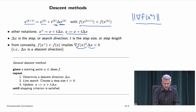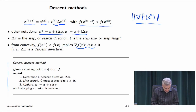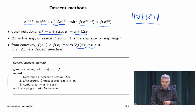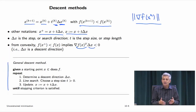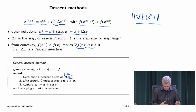Here's a generic descent scheme. Given a starting point in the domain, at each step you determine a descent direction, do a line search to choose t such that f decreases, then update x. You repeat until a stopping criterion is satisfied — in real control flow you'd compute the descent direction, check if its norm is below some tolerance and break if so. To make this a real algorithm, you need to specify how to compute the search direction and the step size.